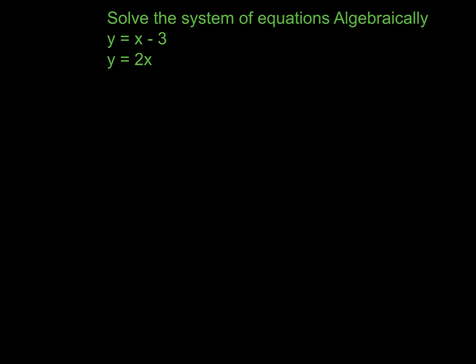In this first example, we're going to solve this system of equations algebraically. We're either going to pick x minus 3 or 2x, it doesn't matter which one, because y is equal to both of them. So I'm going to pick x minus 3 here, and since y is equal to x minus 3, I'm going to put it in for y on this equation. So instead of y, I'm going to write x minus 3, and then copy the rest equals 2x.